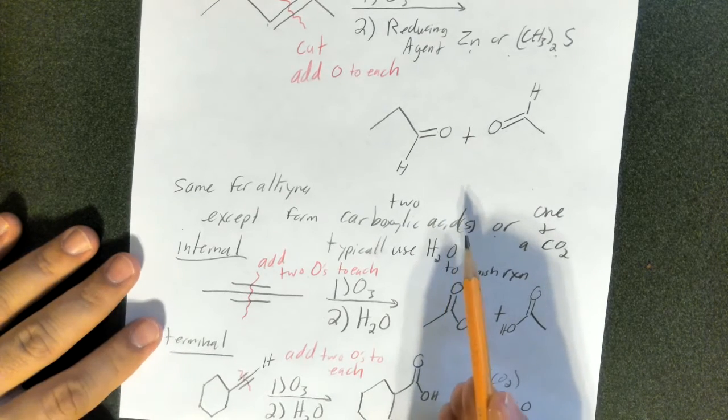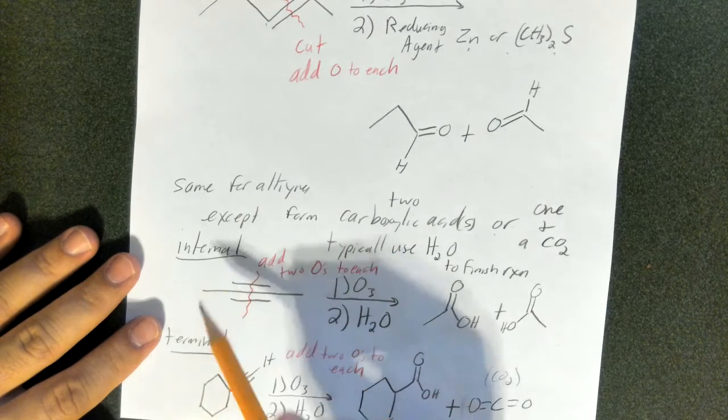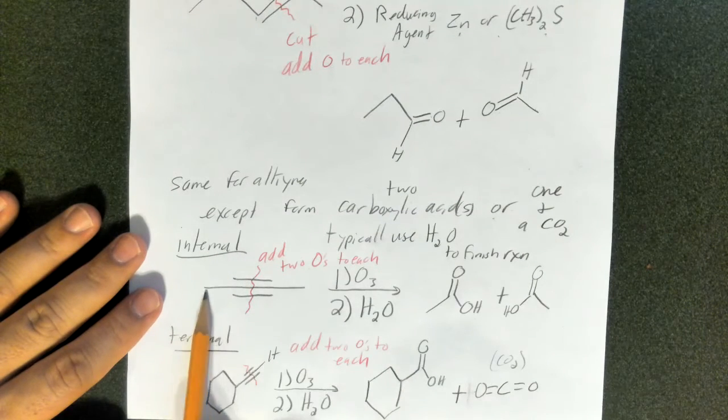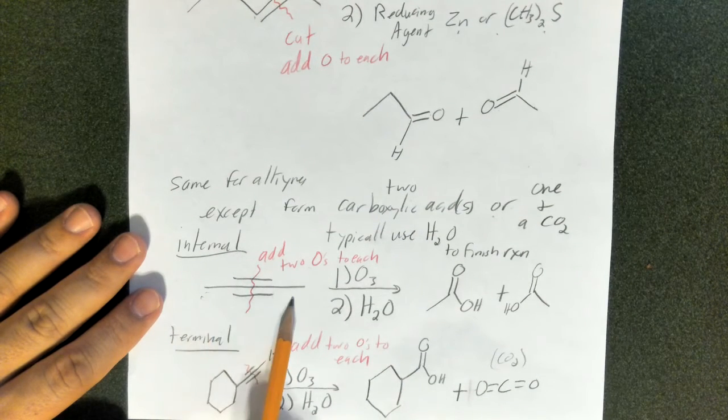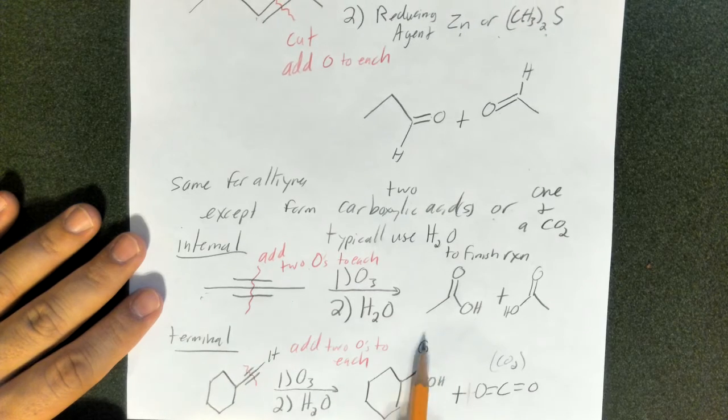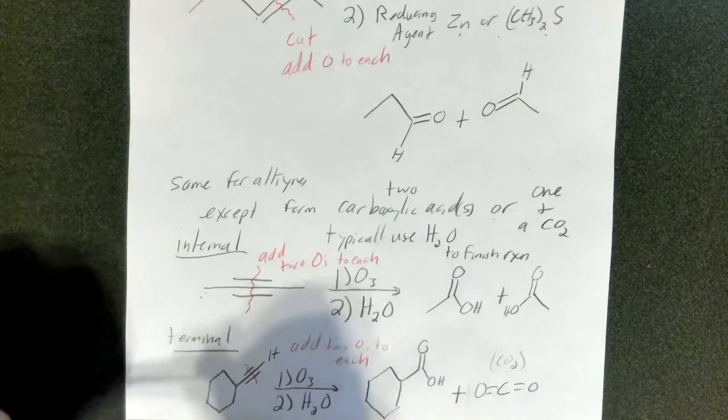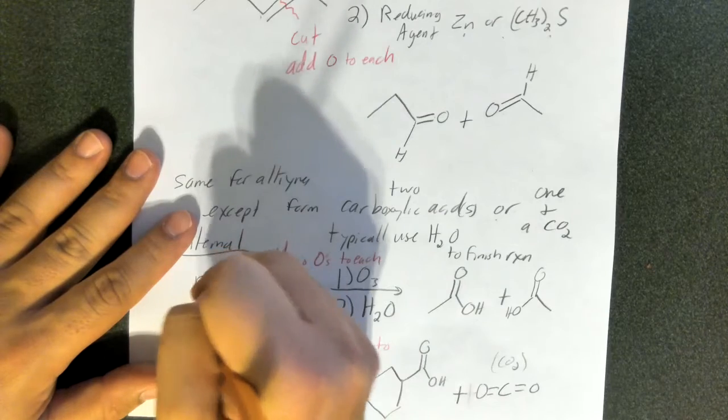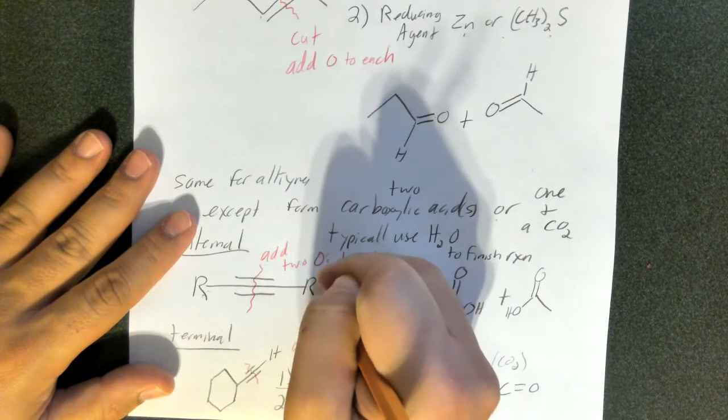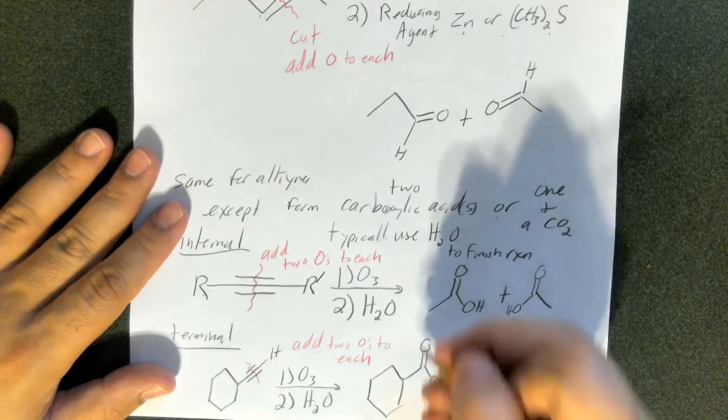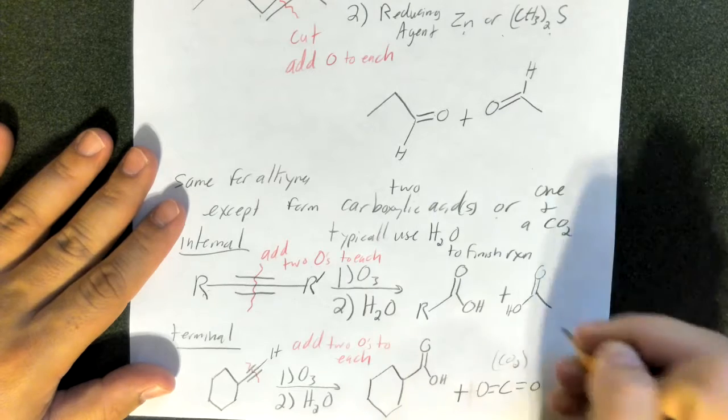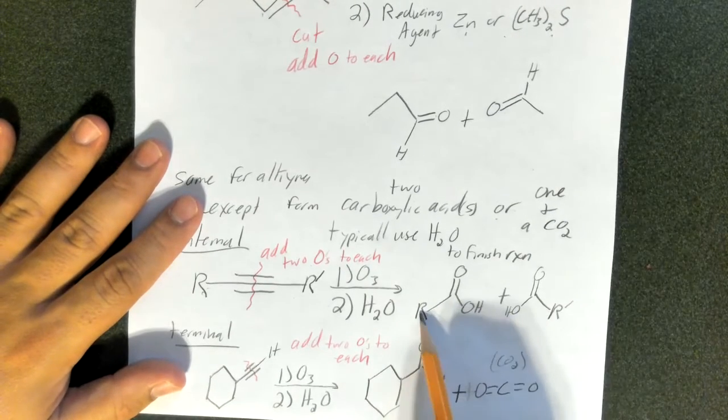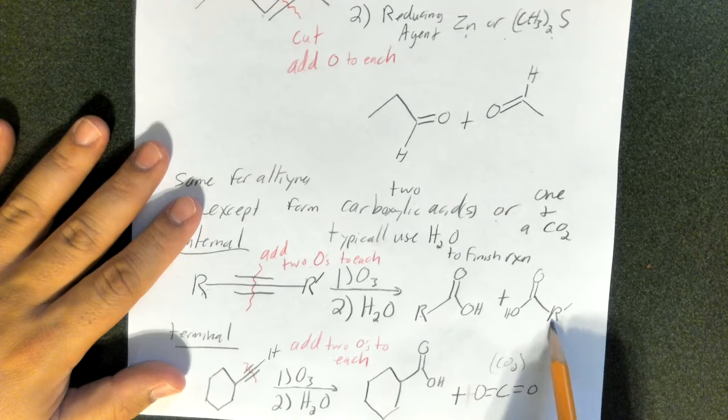Now, it depends if you have an internal alkyne or a terminal alkyne. In the case of an internal alkyne, where each end of the alkyne has an R group on it, you end up with two carboxylic acids. Right here, I have an example where there are methyls. Let's just reduce it to a generic form. So you've got two different R groups there. Then you end up with two carboxylic acids, one with an R group and one with the R' group.